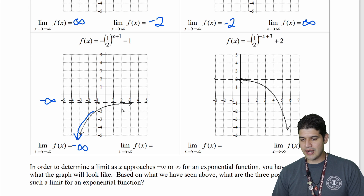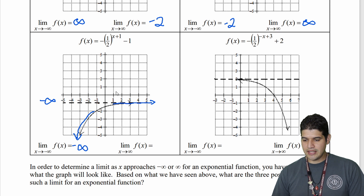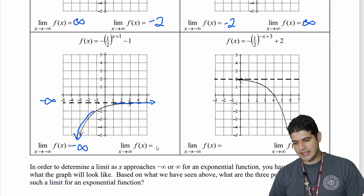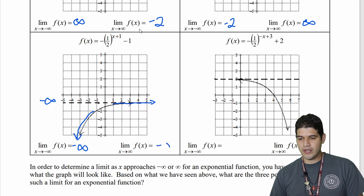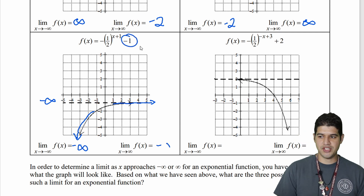On the right side, we have another horizontal asymptote. We're approaching that horizontal asymptote, and in this case it is at negative one. I just want to point out — there's the negative one right there in the transformation.